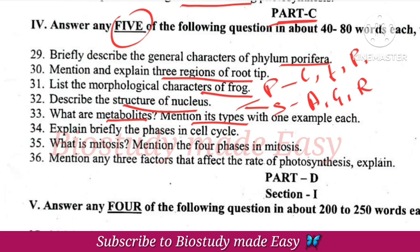The cell cycle is explained in phases — interphase and mitotic phase. Mitosis is explained in 4 phases. Factors affecting rate of photosynthesis — explain.